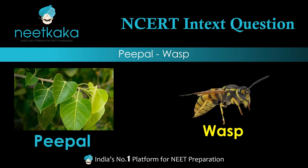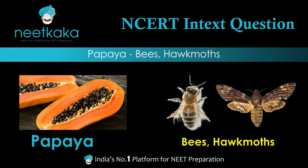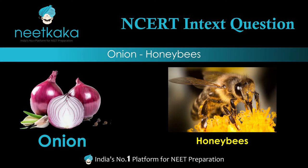In peepal, the pollinating agents are wasps, which are a kind of insect. In coriander, the pollinating agents are the majority of insects. In papaya, the pollinating agents are bees and hawk moths.